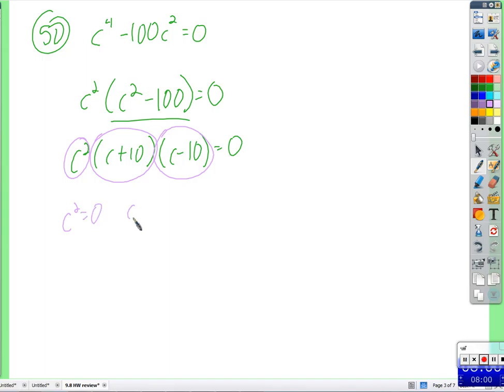One of them has to be zero. One of these things I've circled. Either c squared is zero, or c plus ten is zero, or c minus ten is zero. So we let all them be equal to zero and see what c would have to be in each of those possibilities. Okay, take the square root of both sides, you get c is zero.